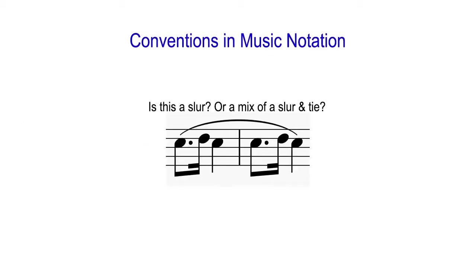Suppose you have a group of notes connected together with a curve line and some of the notes next to each other are the same. Do you have a slur, or a mix of both a slur and a tie? Following the previous example, it is a slur when we see a curve line over more than two notes, even when some adjacent notes are the same. If you want to connect the same two notes intended to be played as one long note, you simply add a tie between them.